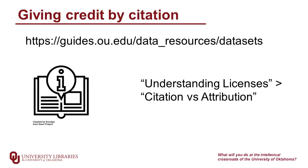You can read more in depth about the difference between citation and attribution at our research guide at this link. Look for the heading 'Understanding Licenses' and then 'Citation versus Attribution.' Citations are often what are counted for fellow researchers, though. Many of us need that citation for impact factors, reports for promotion and tenure. The norms around attribution and citation are still being developed for data and software relative to papers, as you can see from reading the links in our research guide.